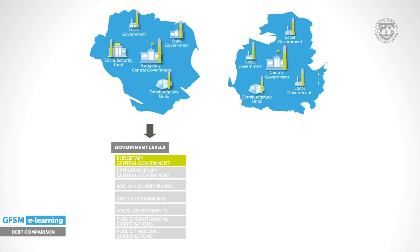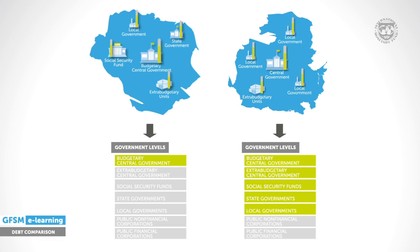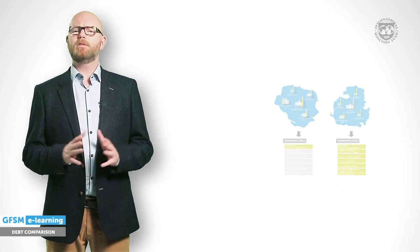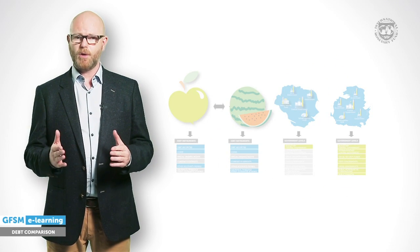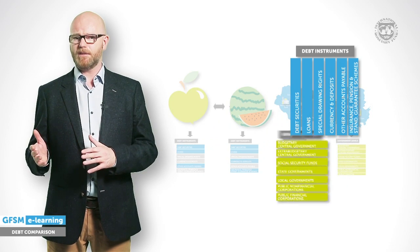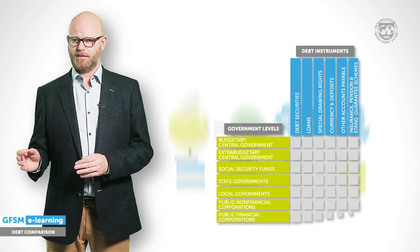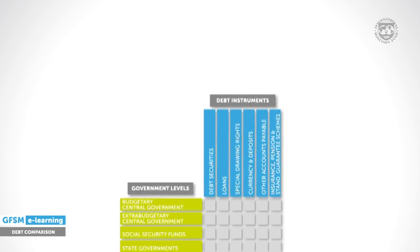Some countries publish only on the budgetary account, while others publish on the entire general government or even the whole public sector. The IMF has developed a matrix format that enhances transparency with respect to those two dimensions: the coverage of debt instruments and the coverage of levels of government. The matrix brings these two dimensions together, with increasing levels of debt instruments shown on the X axis and increasing levels of government arranged on the Y axis.